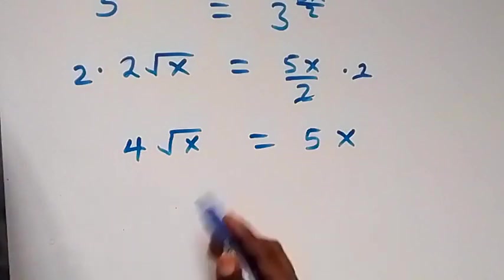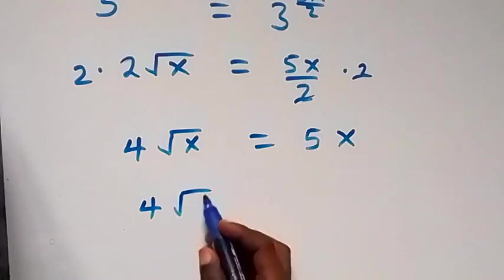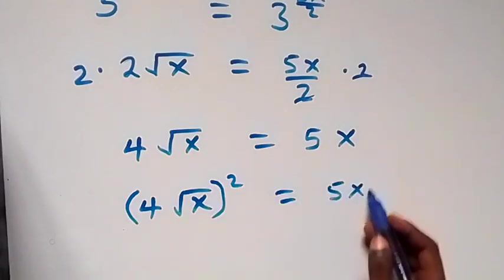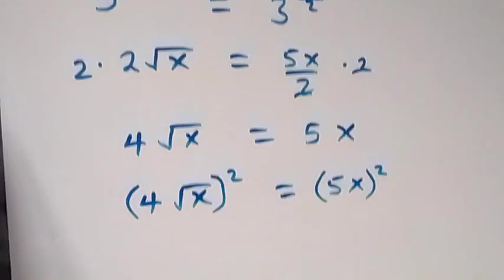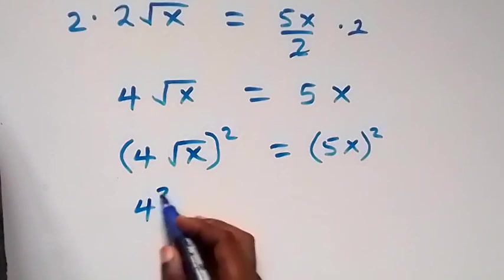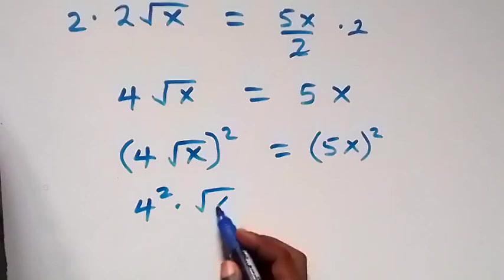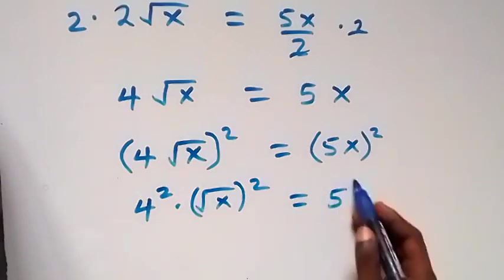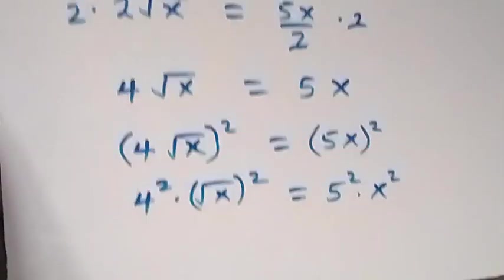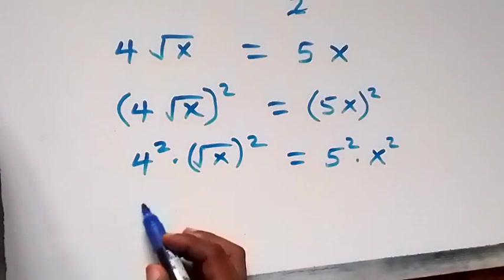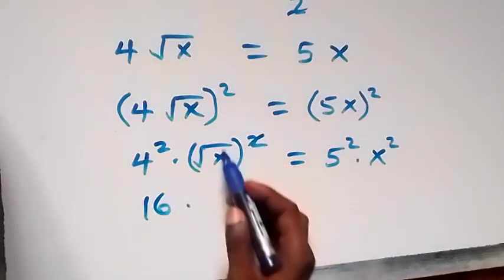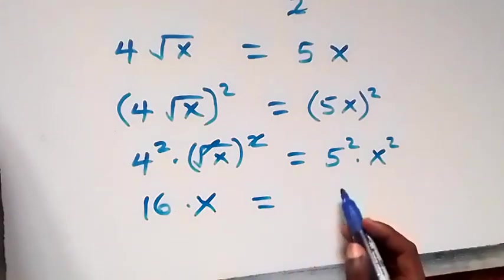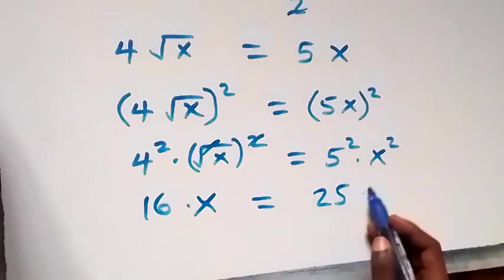Next, we square both sides. We have (4 root x) squared equals (5x) squared. On the left, 4 squared is 16 and (root x) squared is x, giving 16x. On the right, 5 squared is 25, giving 25x squared.